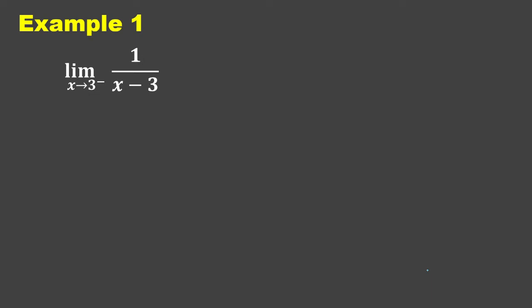Let us try to answer some examples. Let's say we have the limit of 1 over (x minus 3) as x approaches 3 from the left. The first thing to do is to find f of 3, or to plug in 3 to the given equation. So we have 1 over (3 minus 3), which gives f of 3 equal to 1 over 0. So we can say that we have a vertical asymptote at x equals 3. Whenever we have a finite number over 0, we would be having a vertical asymptote at that number. If we have 0 over 0, we use a different strategy.